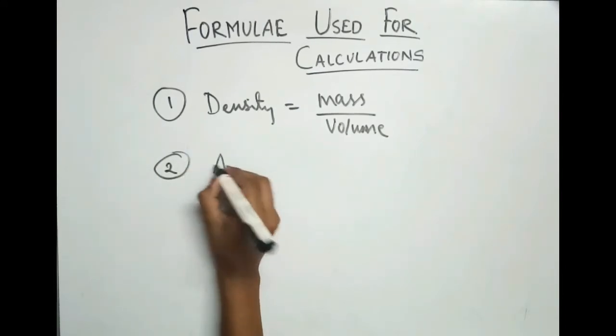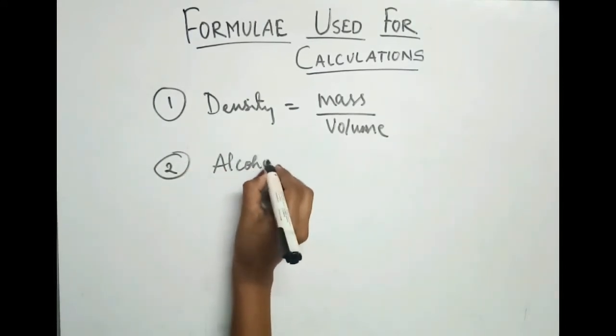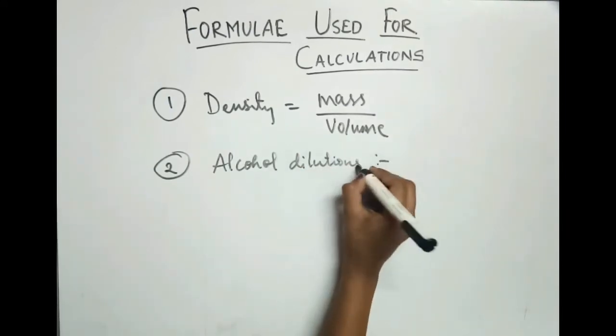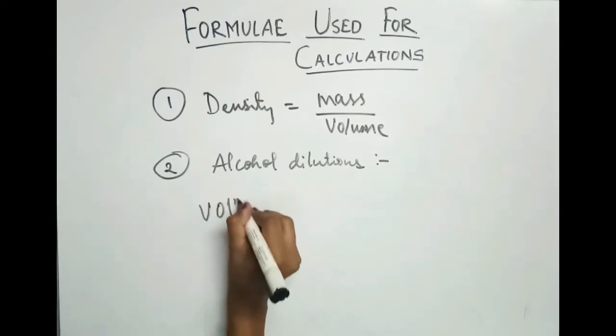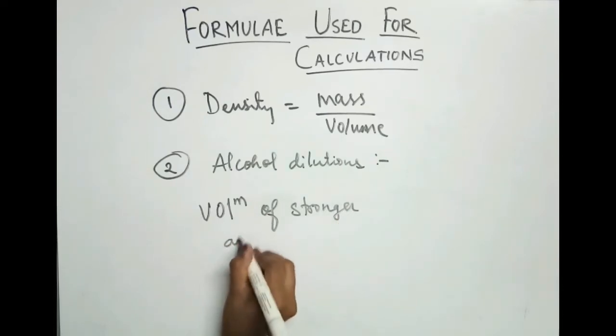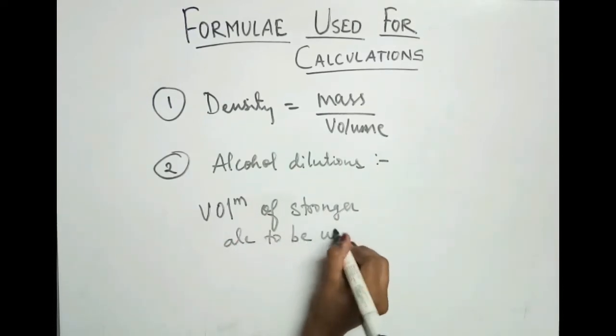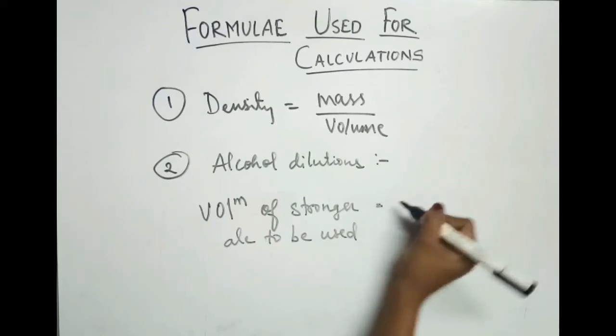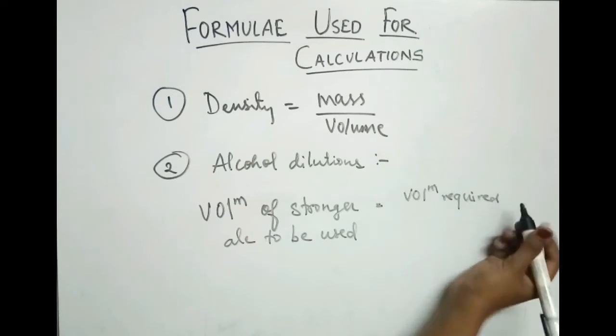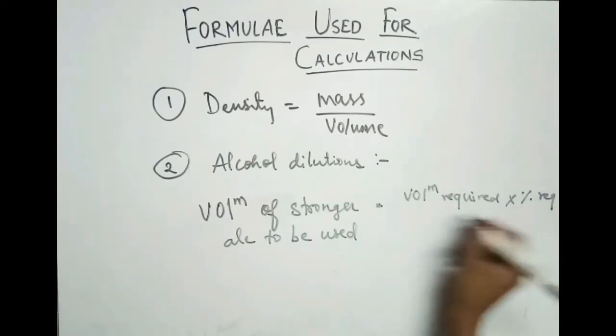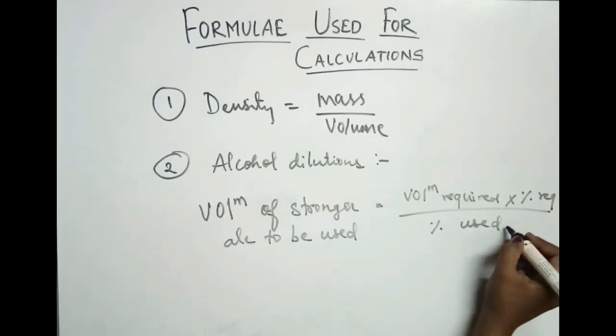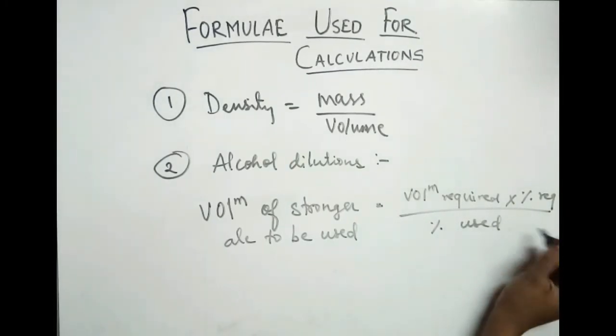Second one is for alcohol dilutions. Volume of stronger alcohol to be used equals volume required times percent required upon percent of alcohol used.